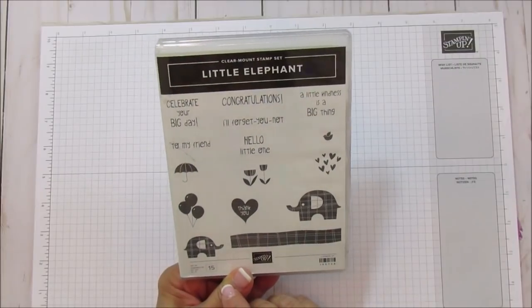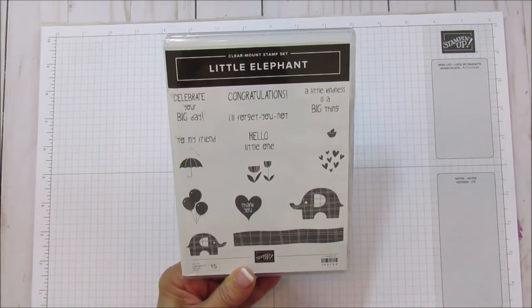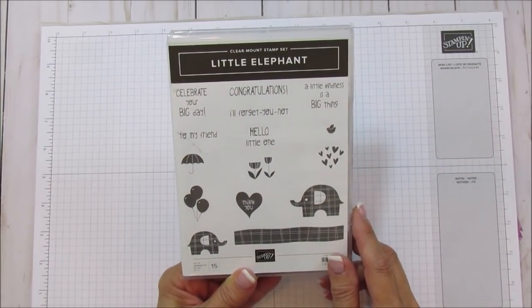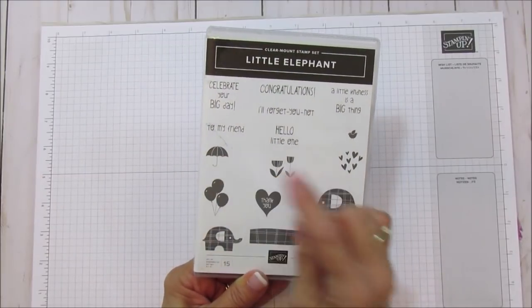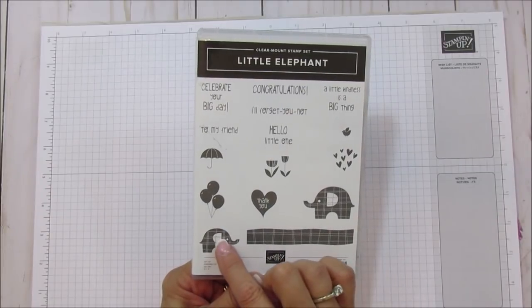This is great even for cards, like if you want to make thank you cards for a baby or congratulations cards to put with your gift. It's got everything. Here's a little umbrella for a shower. Today we're going to use this little elephant, the hello little one, and these hearts.